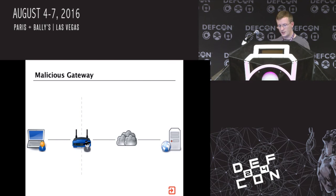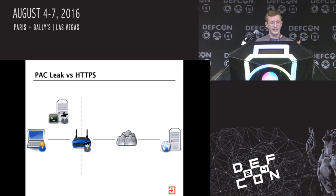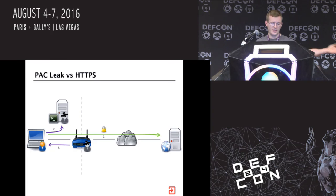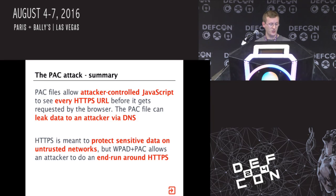Going back to the overall attack: a malicious gateway can intercept any plain text HTTP traffic easily. But if we're talking HTTPS, the attacker can't intercept that. However, if we're now leaking every single HTTPS URL - the malicious gateway tells your laptop to use a malicious PAC script and it's now leaking all the HTTPS URLs. To sum up: PAC files allow attacker-controlled JavaScript to see every single HTTPS URL before it gets requested by the browser. The PAC file can then leak that data to an attacker via DNS. The whole point of HTTPS is to protect sensitive data on untrusted networks, but with WPAD and PAC, an attacker can essentially do an end run around HTTPS.